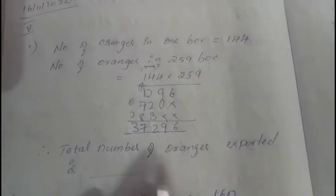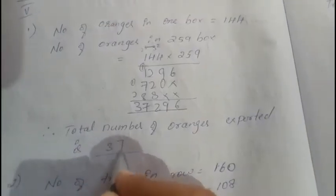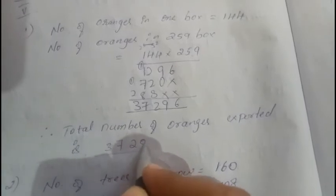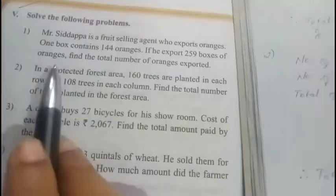You need to write the total number. Therefore, total number of oranges exported is 37,296 oranges. Similar to that, we have the second question here.